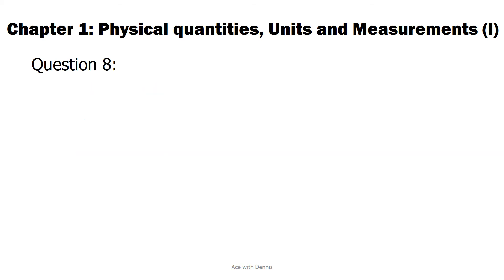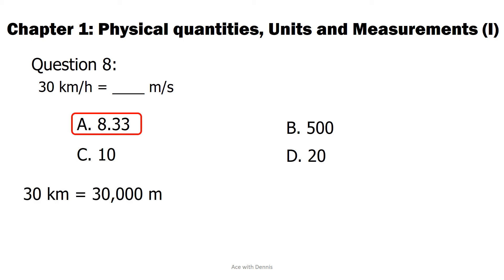Question 8: 30 kilometers per hour equals how much in meter per second? Is it A. 8.33. B. 500. C. 10. Or D. 20. The answer is A. 8.33. 30 kilometers per hour equals 30,000 meters over 3,600 seconds. The answer is 8.33 meters per second.